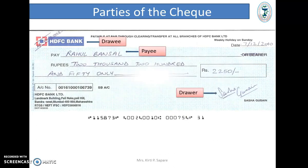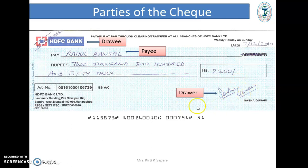This is an example of a check. The person who draws or signs the check is the Drawer, the bank is the Drawee, and the Payee is the person who will get the money. These are the three parties of a check.